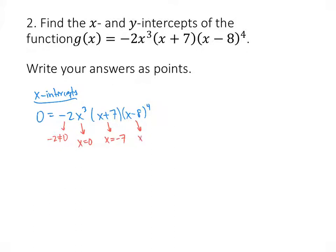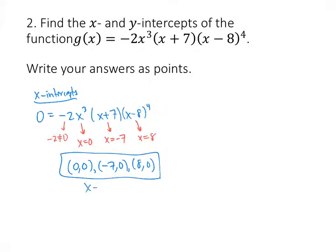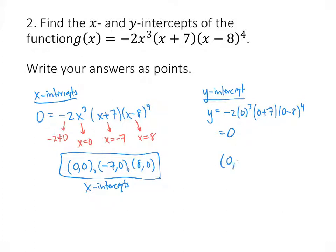x minus 8 as a factor gives us x equals 8. The fact that x minus 8 is repeated four times doesn't give additional solutions — it just means x equals 8 is a solution. So we have three x-intercepts: (0, 0), (−7, 0), and (8, 0). For the y-intercept, we plug 0 in for x. We're multiplying by 0 (from the x cubed term), so we get 0. The y-intercept is (0, 0). Note that (0, 0) is both an x-intercept and a y-intercept, but we list it under both.